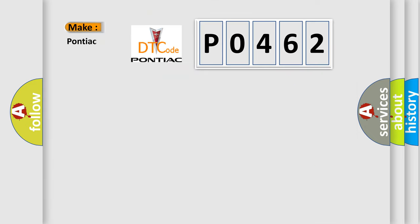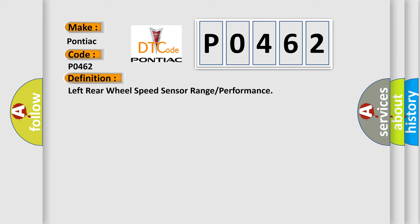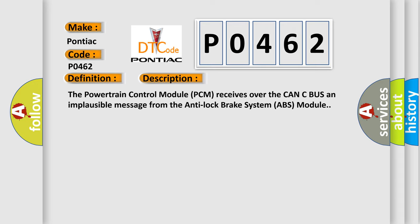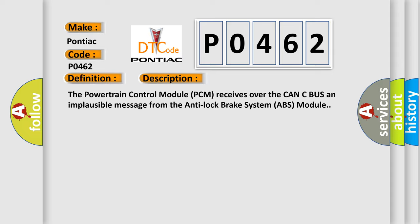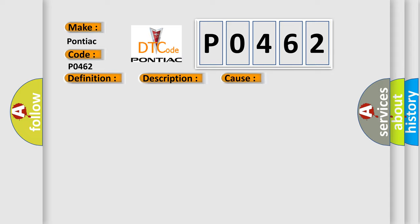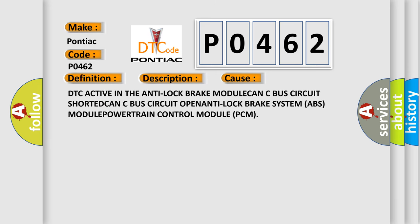So, what does the diagnostic trouble code P0462 interpret specifically for Pontiac car manufacturers? The basic definition is: left rear wheel speed sensor range or performance. The powertrain control module (PCM) receives over the CAN-C bus an implausible message from the anti-lock brake system (ABS) module. This diagnostic error occurs most often in these cases: DTC active in the anti-lock brake module, CAN-C bus circuit shorted, CAN-C bus circuit open, anti-lock brake system ABS module, or powertrain control module PCM.